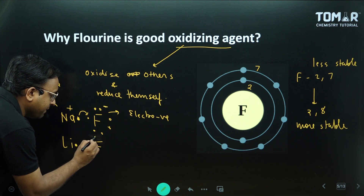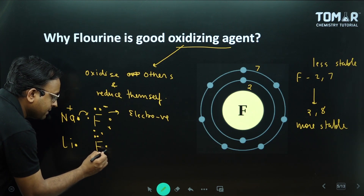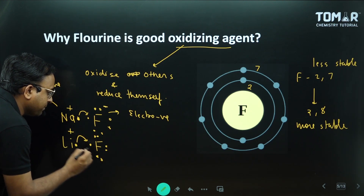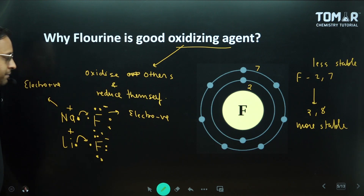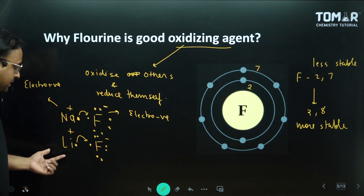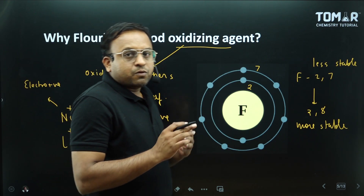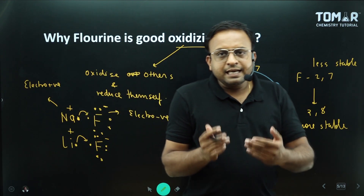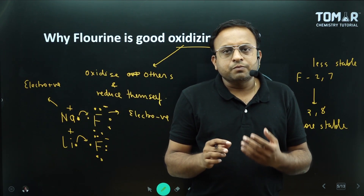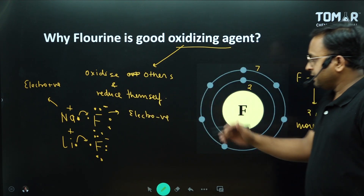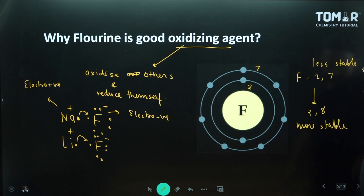Similarly with lithium: lithium is electropositive and becomes positive, while fluorine is electronegative and becomes negative. So fluorine will bond with any metallic element that gives electrons, because fluorine needs to complete its octet.